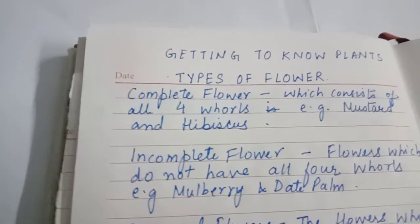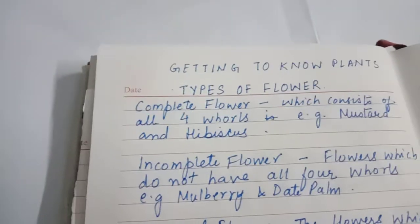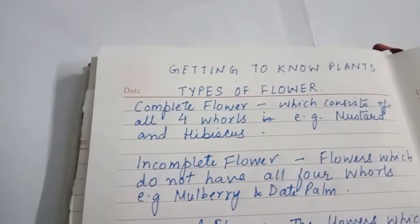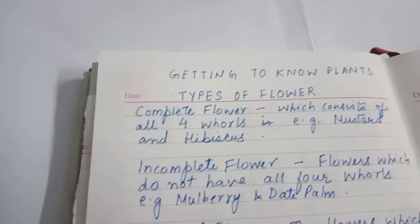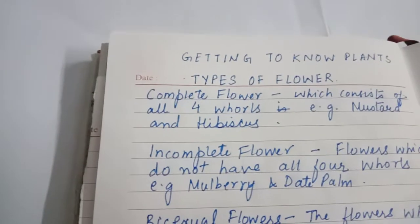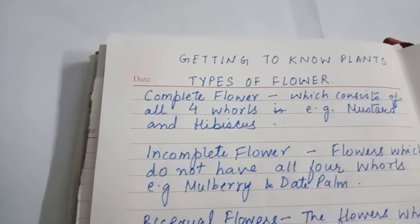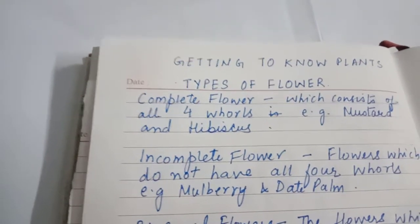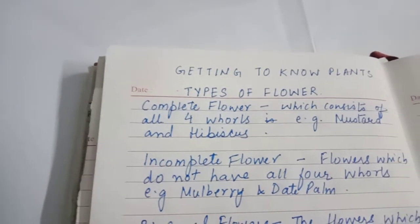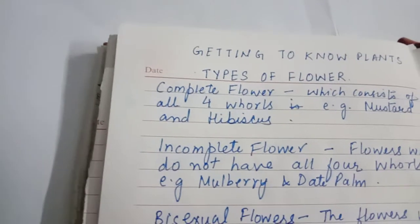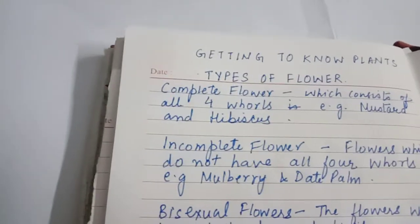In this video I am going to discuss types of flowers. There are four types you will study — flowers are classified on the basis of male and female reproductive parts present and how many parts are present in a flower.